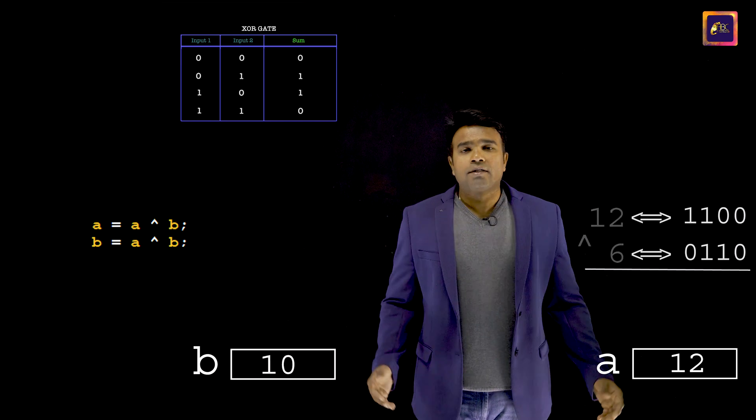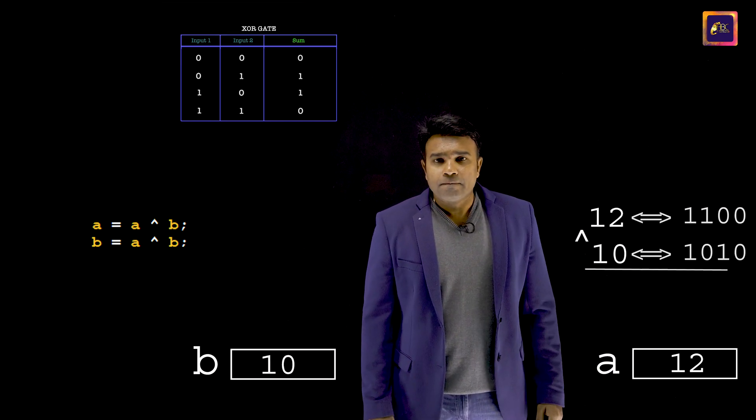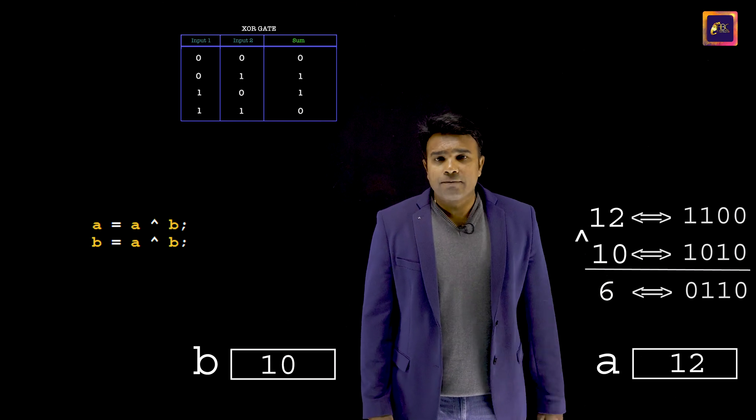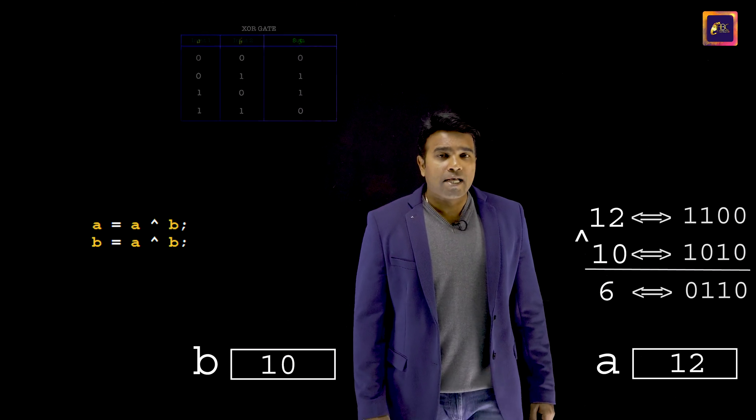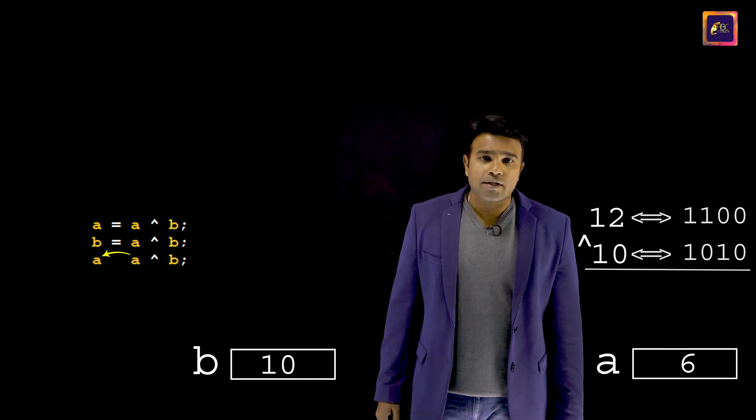Next, the third time I would be XORing A and B. That is the result. And the result, this time I store it in A. And that is the code for it.